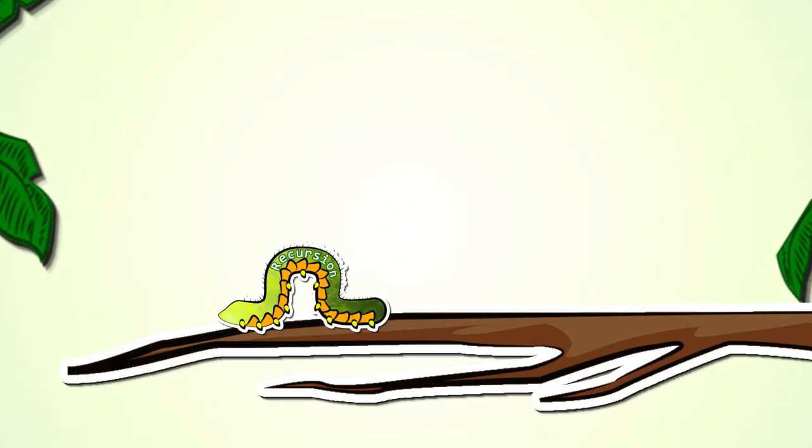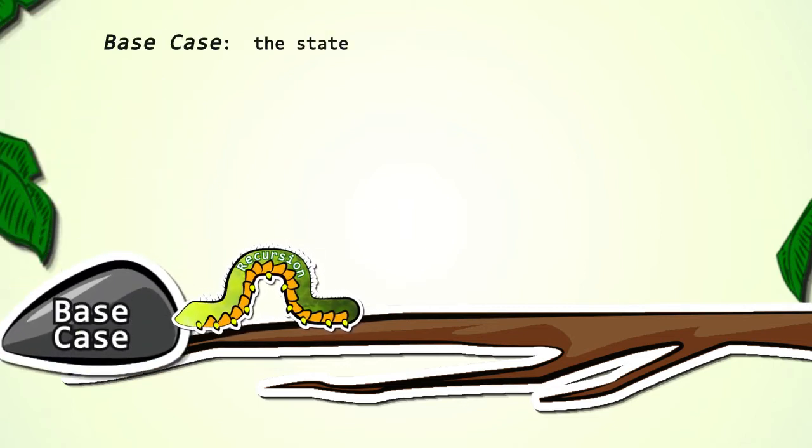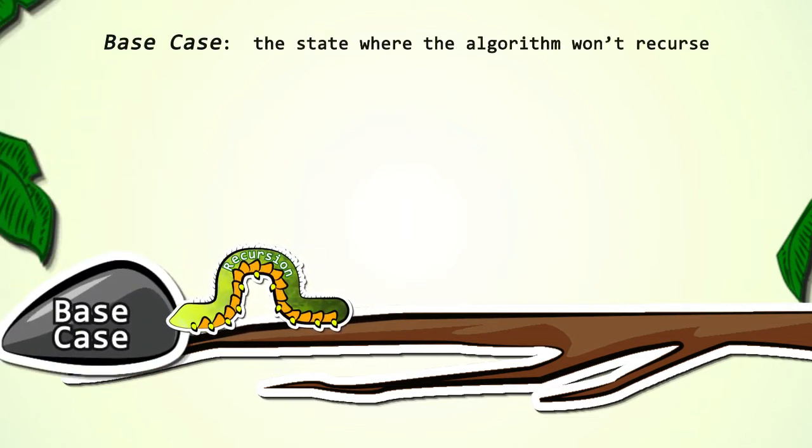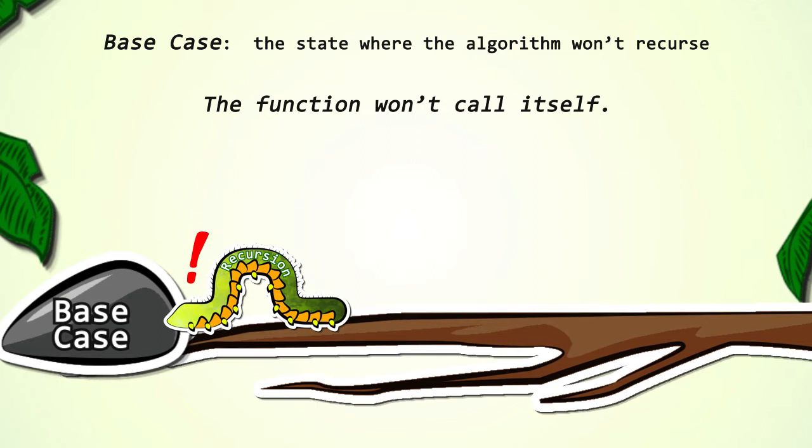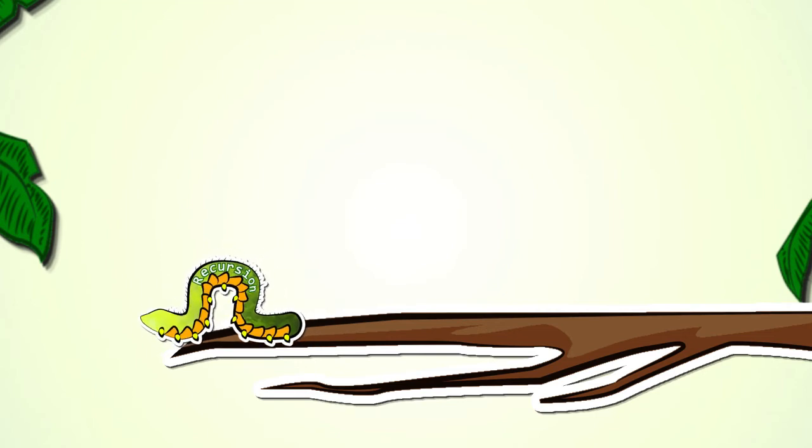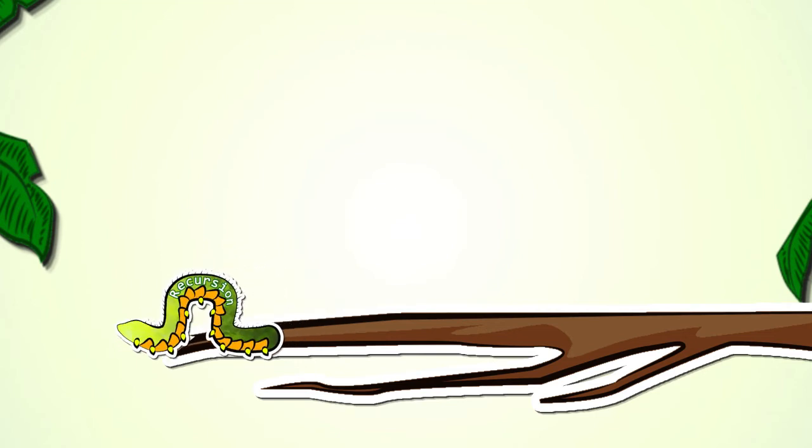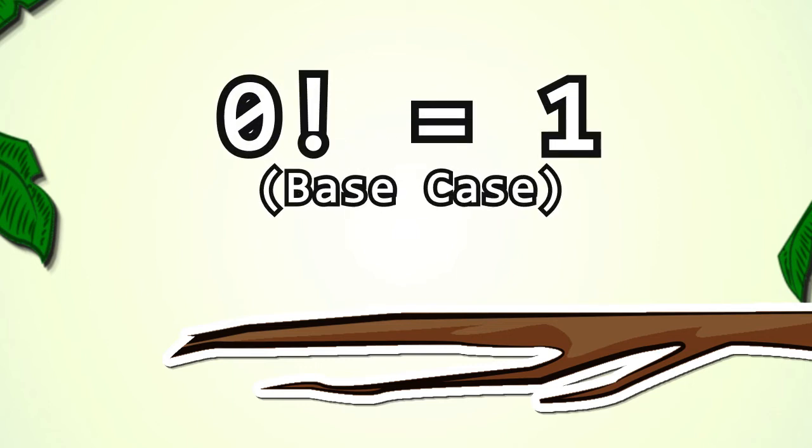In order for recursion to work, we must define a base case. The base case is the state where the algorithm won't recurse. In other words, the case when the function won't call itself. Having a base case prevents the function from calling itself an infinite number of times. If there is no base case, then the recursive algorithm calls itself over and over and over again, until eventually a stack overflow exception is generated and the program crashes. All recursive calls should bring the state closer to the base case.